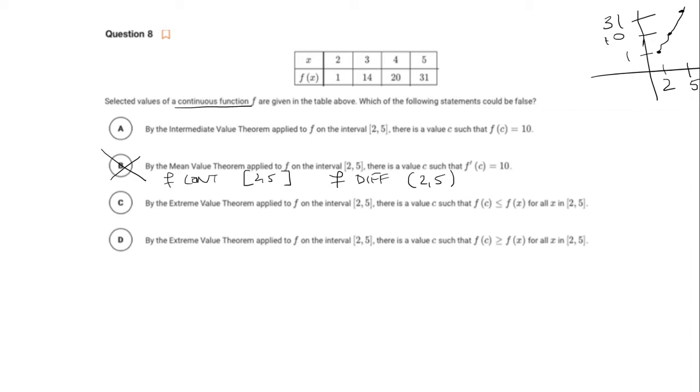For C, by the extreme value theorem applied to f on the closed interval, there's a value of c such that f of c is less than or equal to f of x for all x in the closed interval. So this basically is saying there's a minimum. If f of c is less than or equal to all the values of f of x in the interval, that means there exists a minimum.